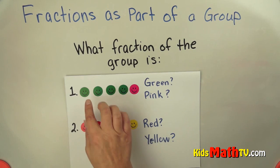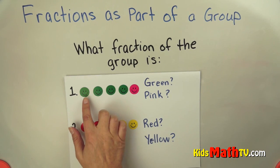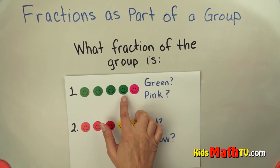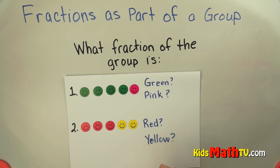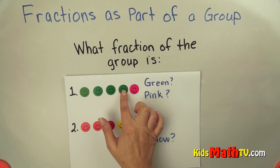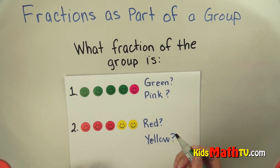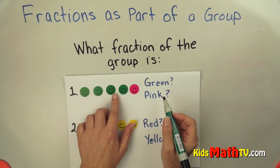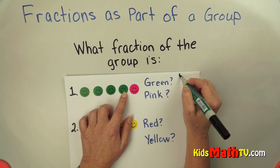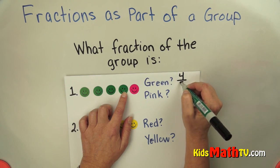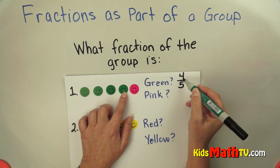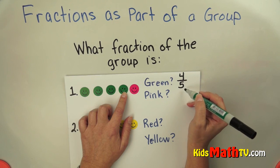Here's our group. Let's count how many are in the group - one, two, three, four, five. So there are five in the group, and one, two, three, four are green. Four out of five are green, so to write that as a fraction we write four out of five.